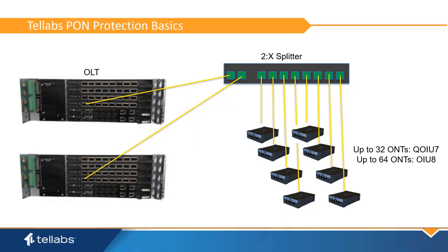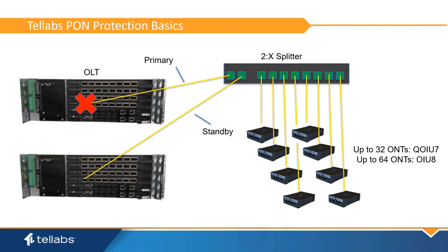In Tellabs PON Protection, one link is considered the primary and the second a standby PON link. The standby PON link does not communicate with the ONT group but monitors for loss of signal on the PON. The standby PON will take over the group if it detects a loss of signal from the primary PON port.